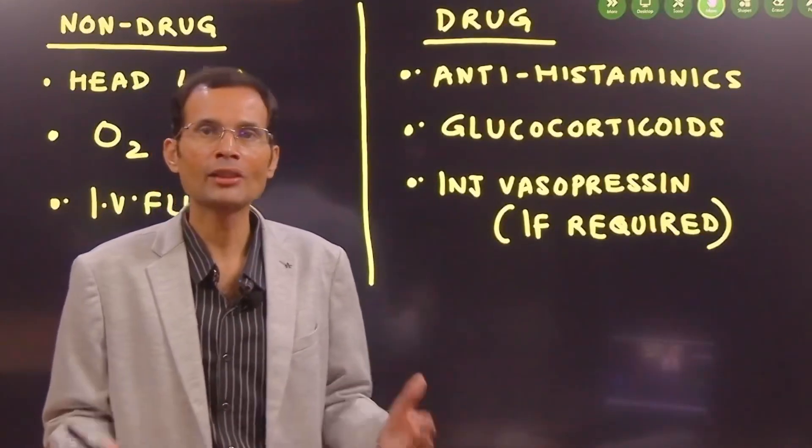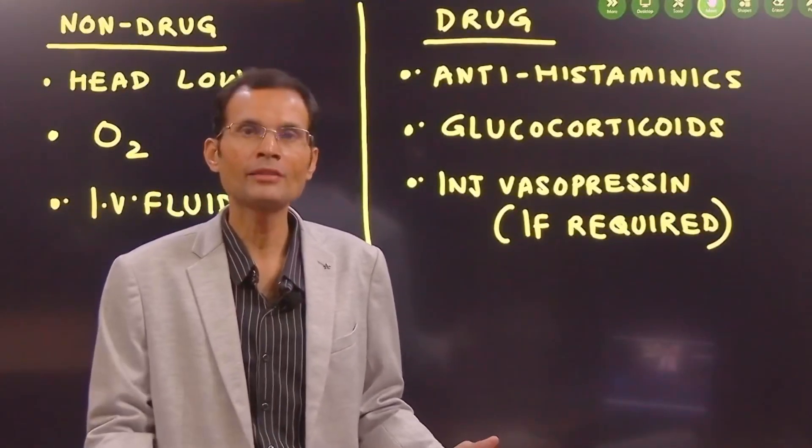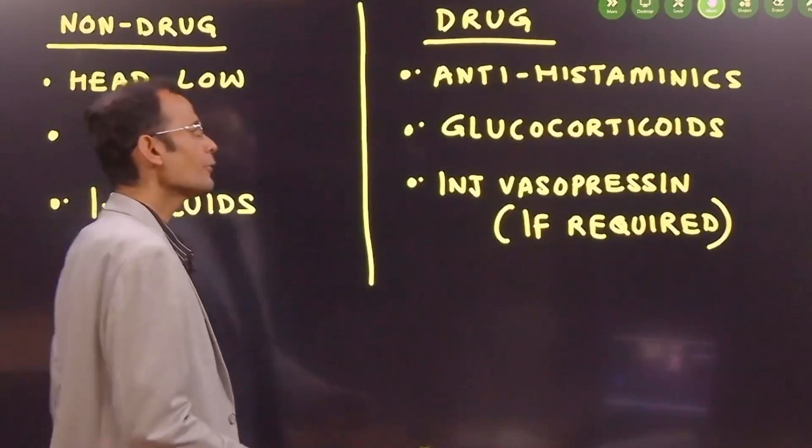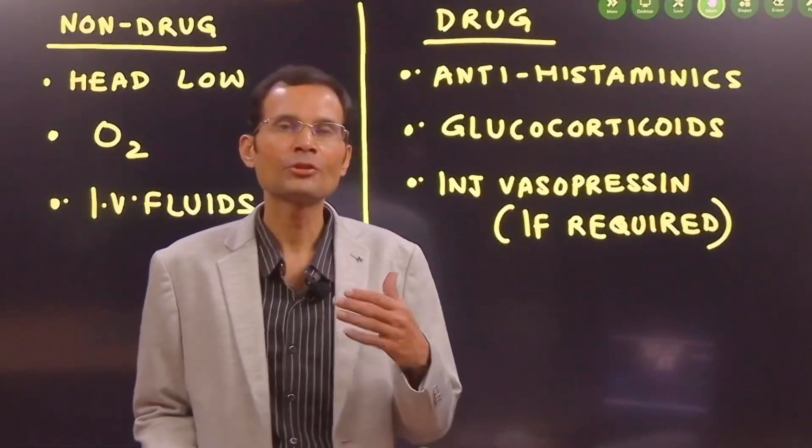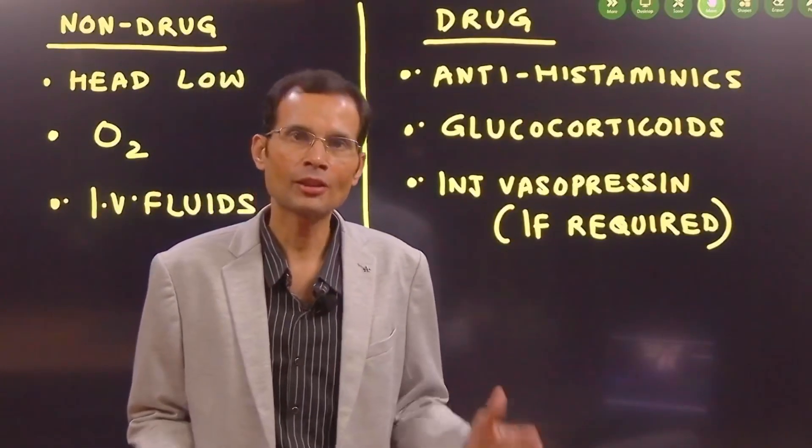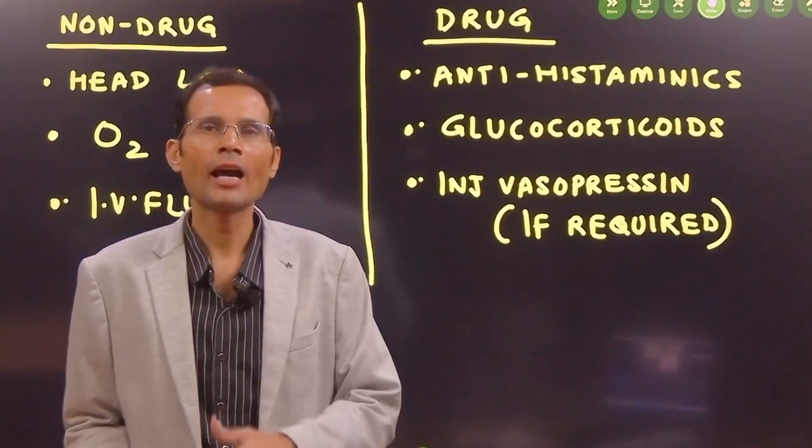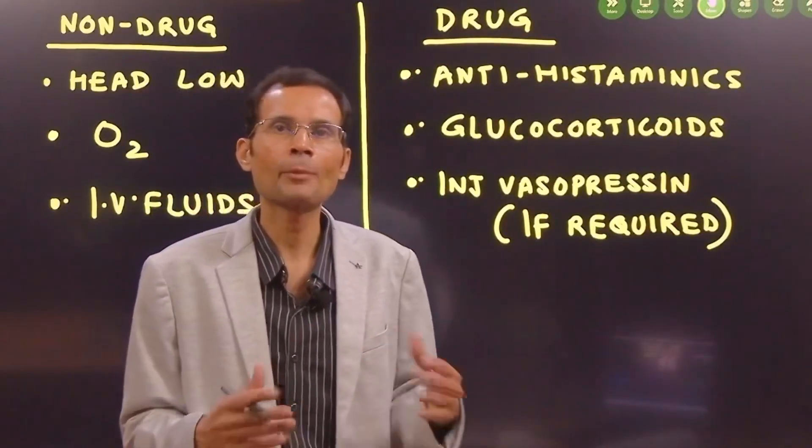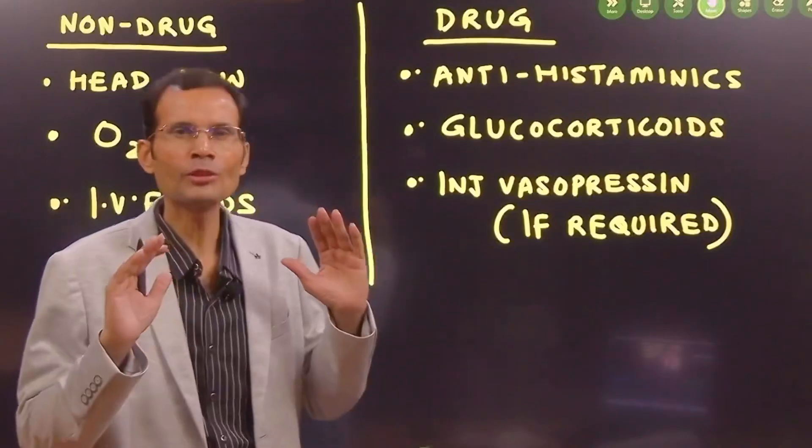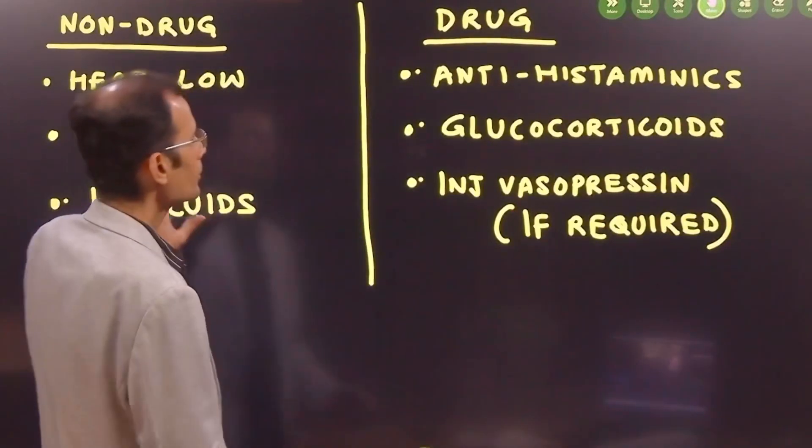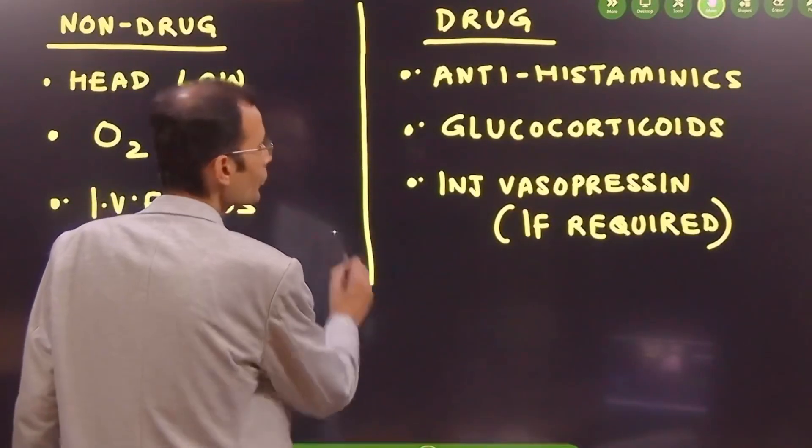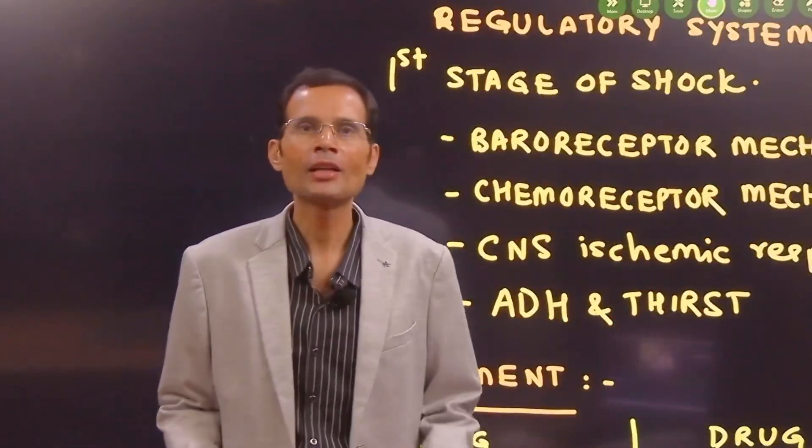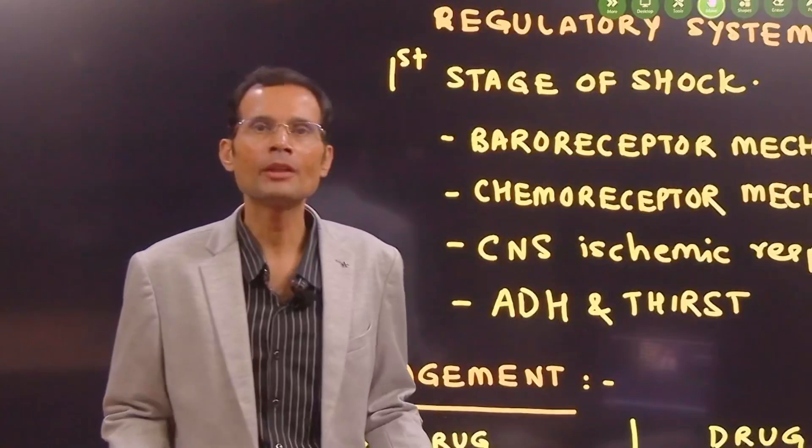Treatment of the cause - you can give antihistaminics to prevent the effects of histamine. Glucocorticoids often have value in conditions of shock, they help in increasing blood pressure, they have a permissive action on catecholamines. If at all required, you can administer vasopressor drugs - vasopressin - and as a last resort, injection epinephrine, but that's only a last resort. Before that, patient is likely to recover from the condition.